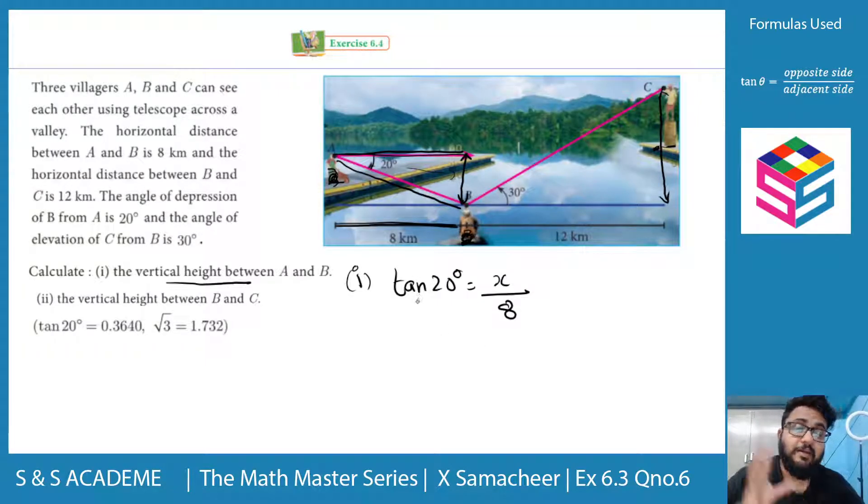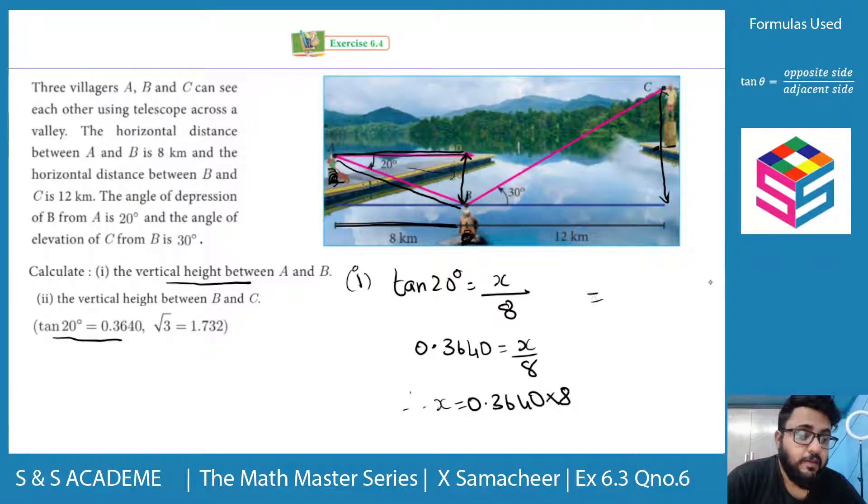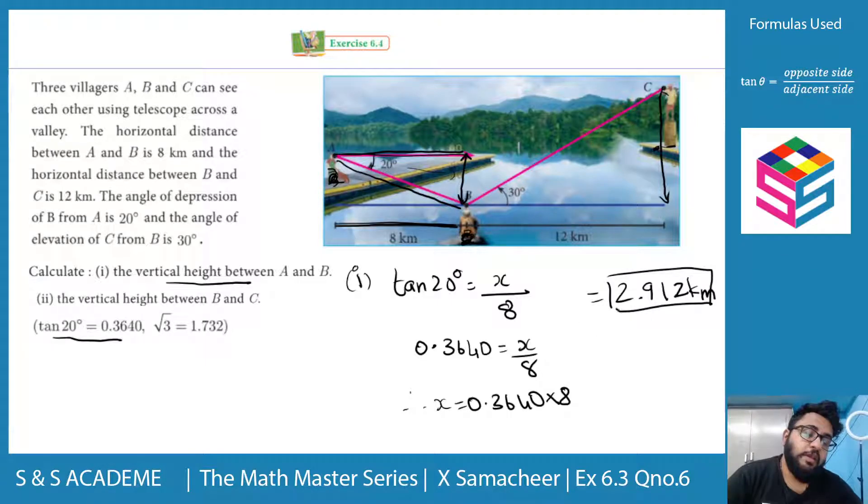Tan 20, so this is the answer for the first question. 2.912 kilometers. That is the vertical height between B and C. That is the vertical height in the horizontal distance.